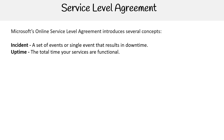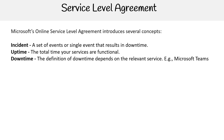The second concept is uptime — this is the total time your services are functional. The next one is downtime, and the definition of downtime depends on the relevant service. For example, with Microsoft Teams, any period of time where users are unable to initiate online meetings, see present statuses, or send instant messages is considered downtime. Your downtime reduces the total time your services are functional.